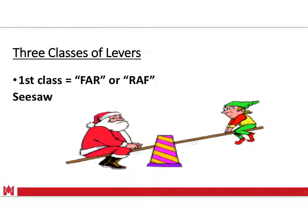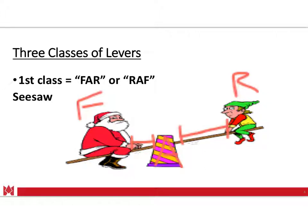A first class lever is typically described like a seesaw. In the middle you have the axis or fulcrum. On either side you have the force, and on the opposite side the resistance. In this example, the resistance could be Santa and the force could be the elf. What you'll notice is it depends on the distance from the force — Santa presumably has a larger mass than the elf — and the distance between the resistance and the axis versus the force and the axis creates the mechanical advantage formula. This is the basic premise for a first class lever.